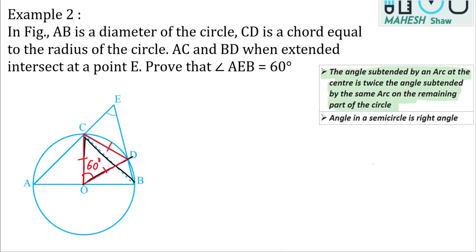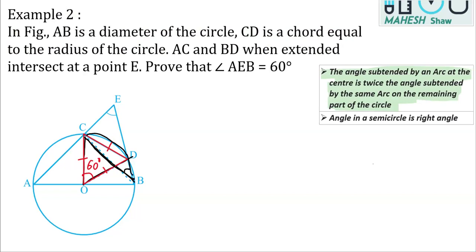Arc CD is making an angle at the center equal to 60 degrees. The same arc CD is also subtending an angle on the remaining part of the circle at point B. Arc CD is making an angle at point B, so from the alternate segment property, this angle will be 30 degrees.